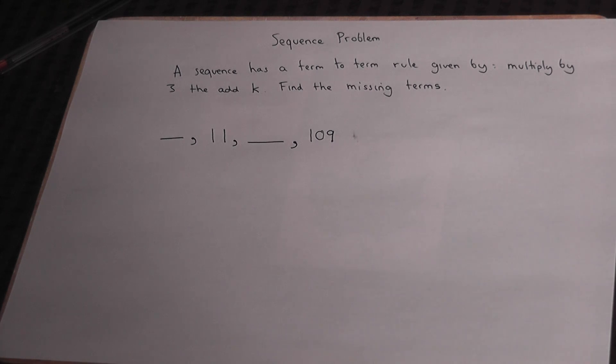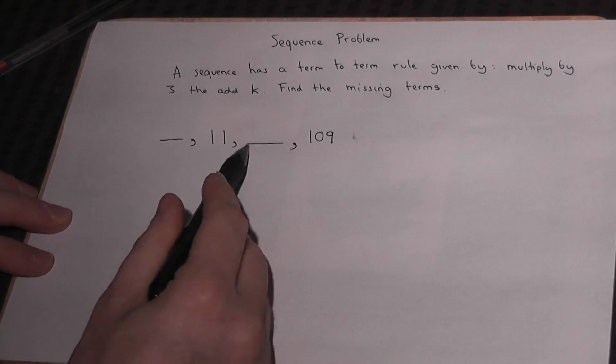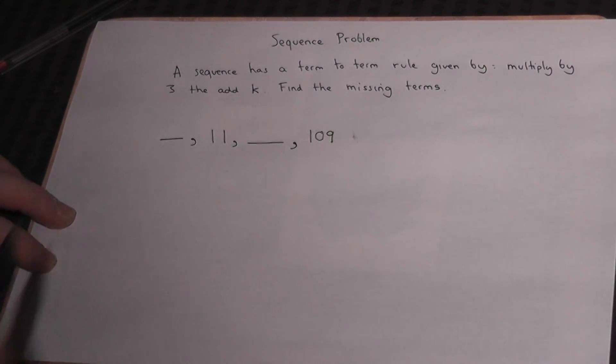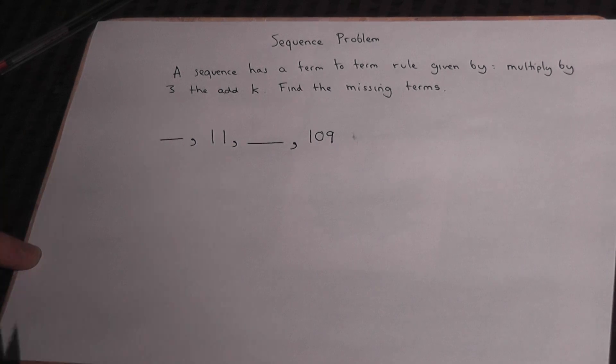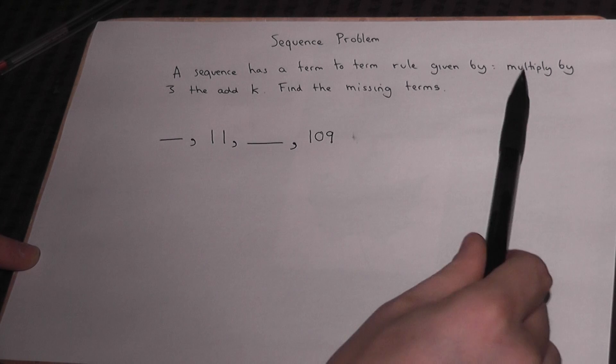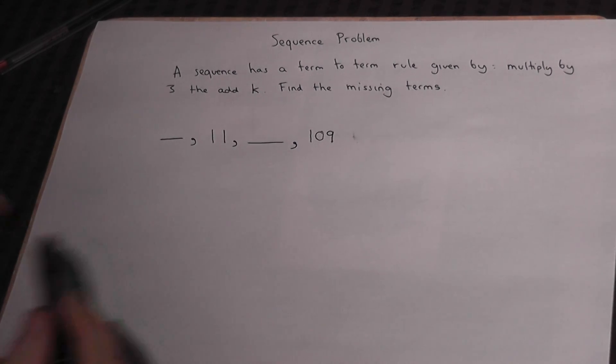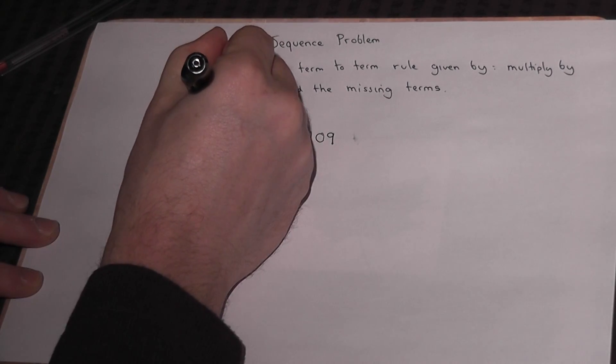This is a fairly common exam style sequence problem. We're given a sequence with four terms in, but two are missing. But we're told how to get from term to term. So we times by 3, then add k.